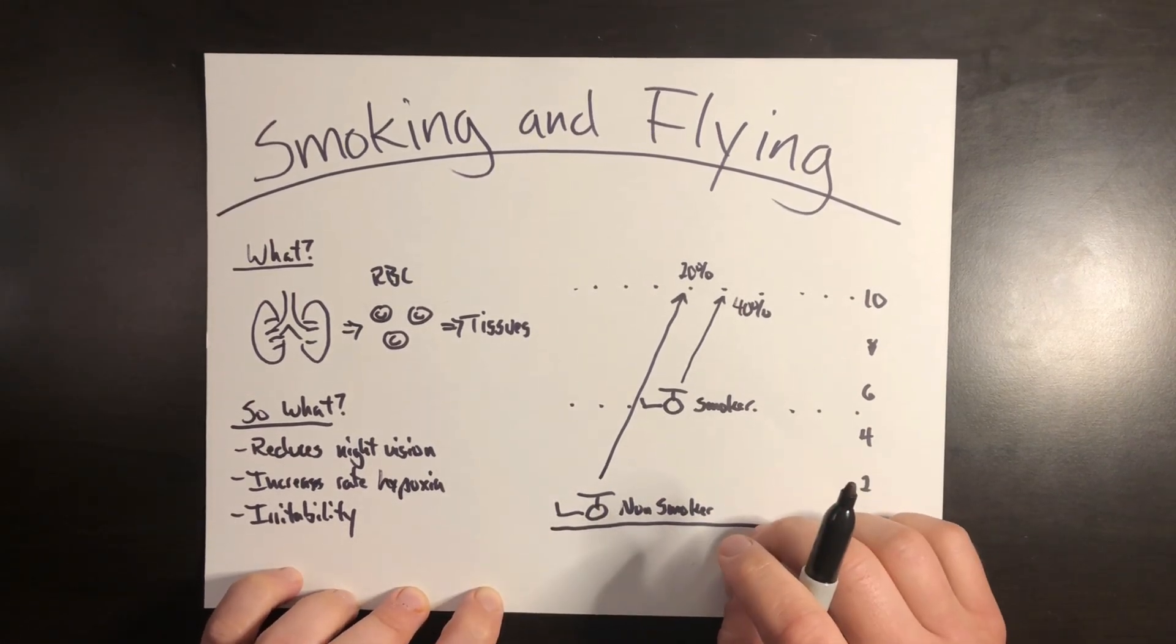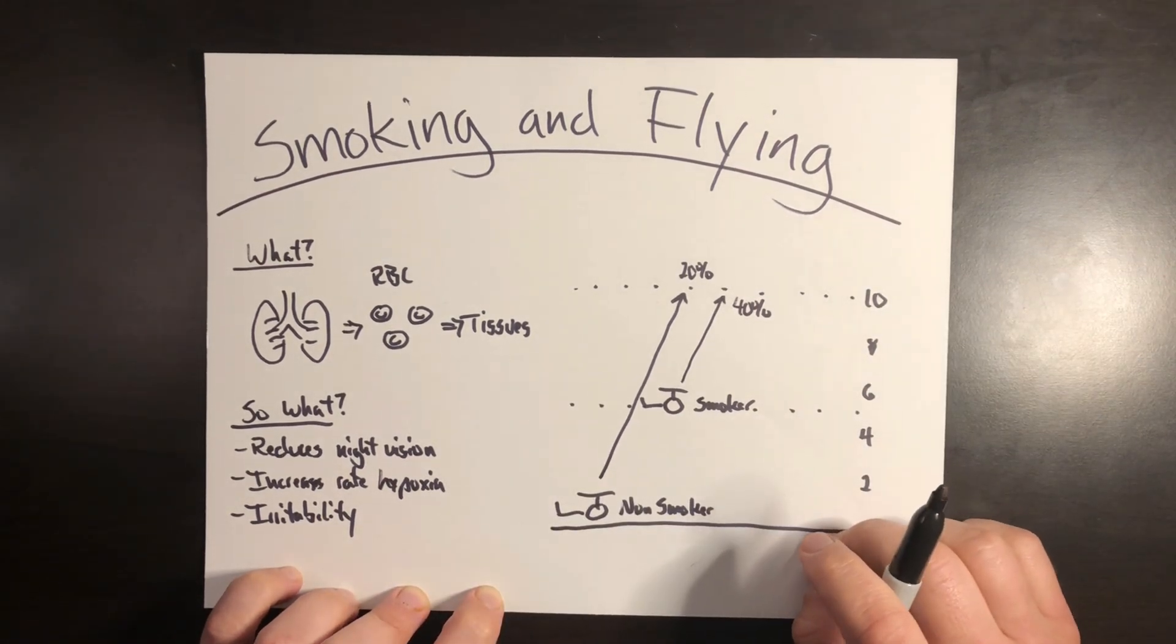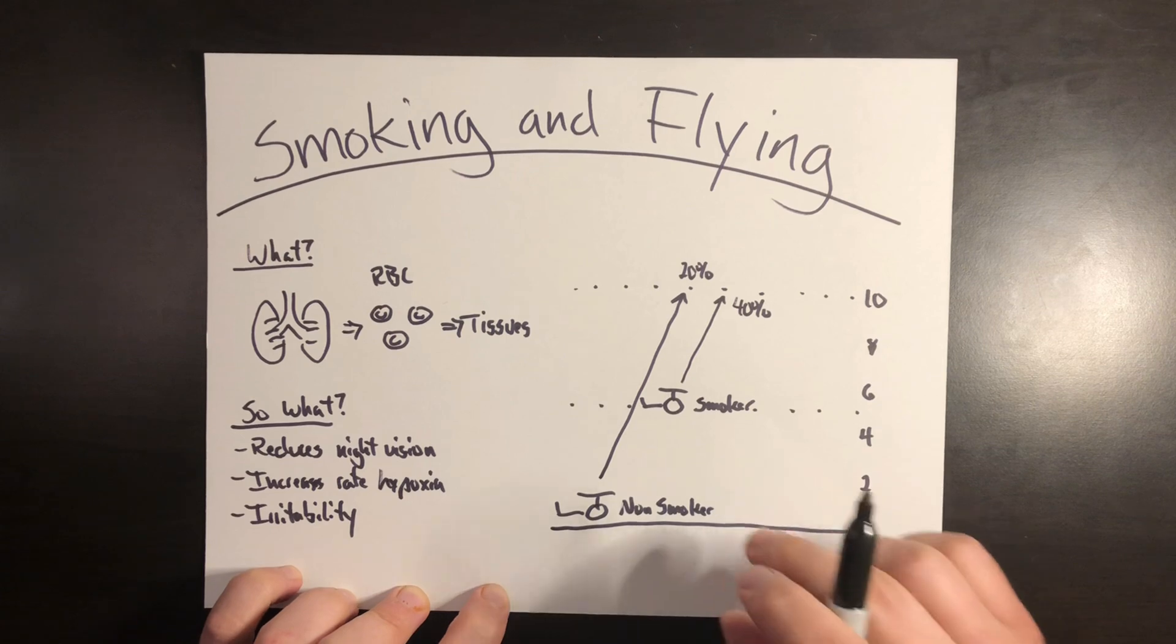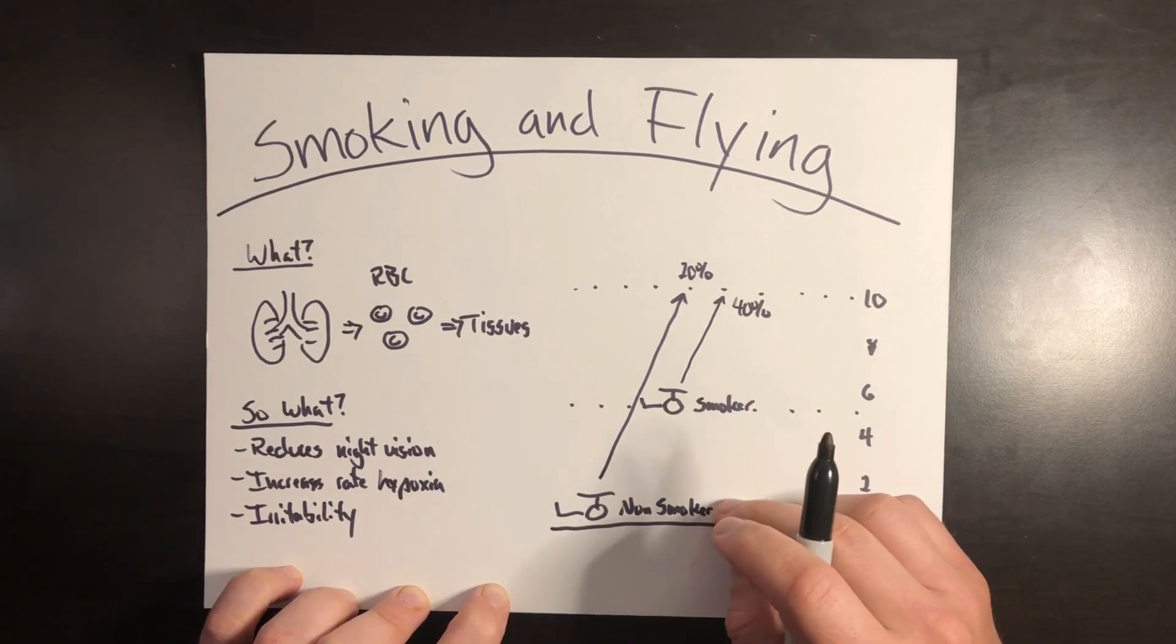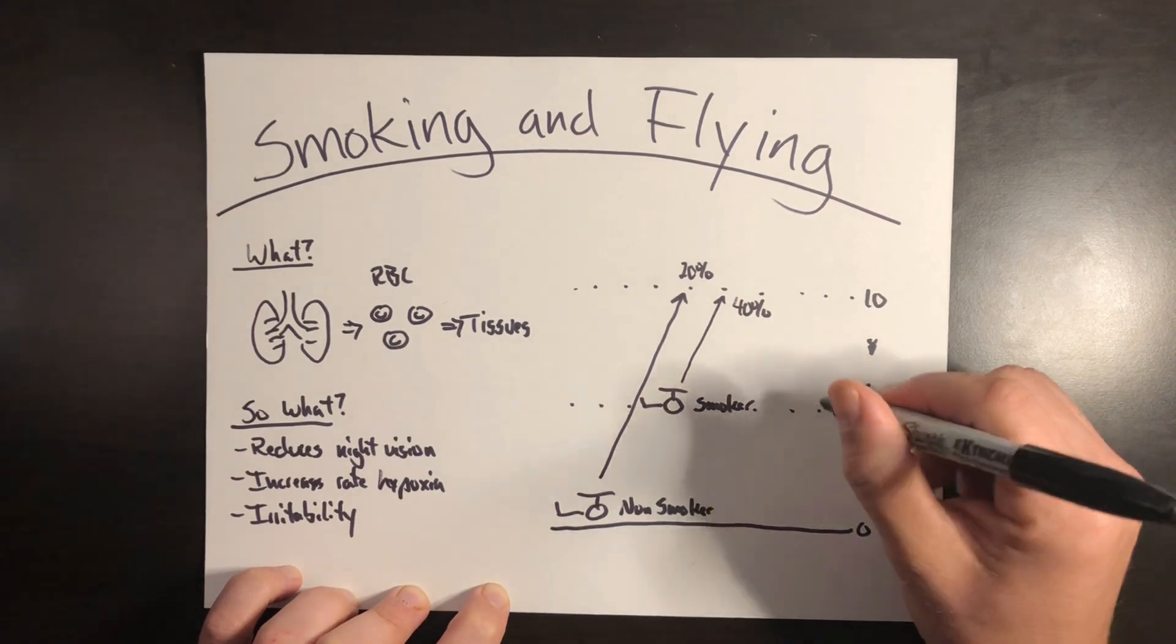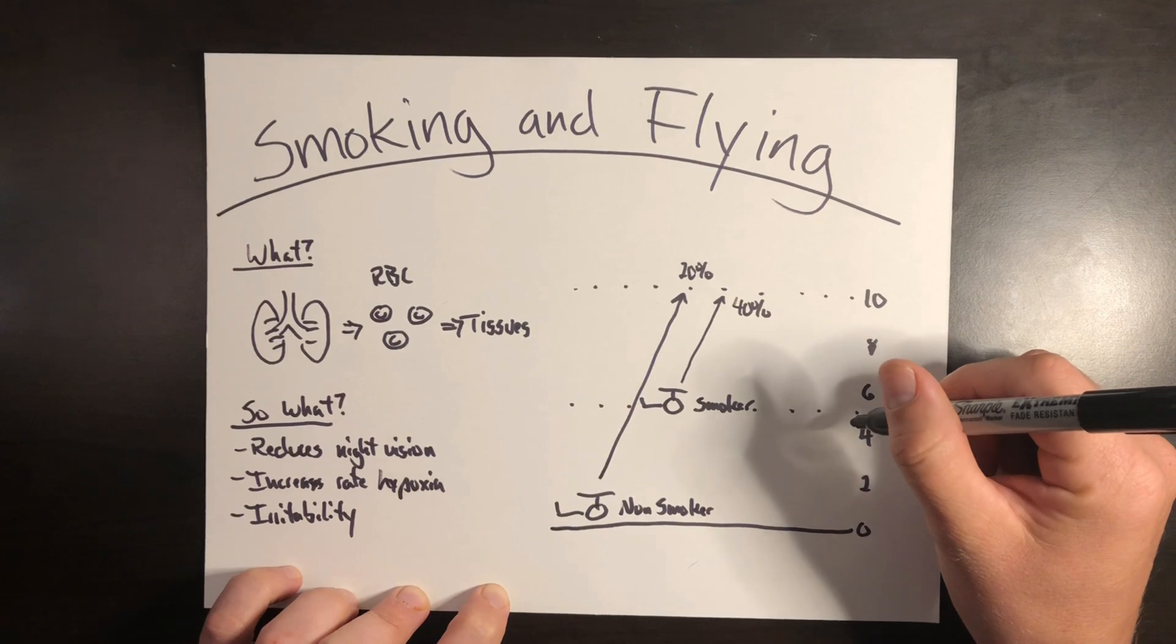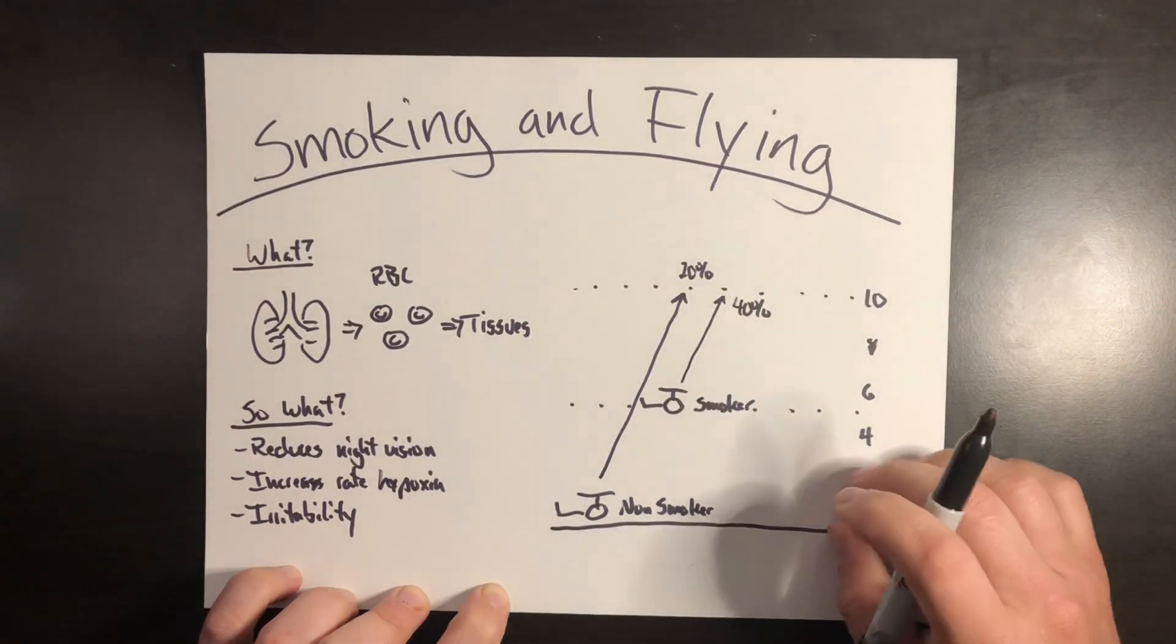So that's the night vision side of it. What about the hypoxia side of it? Once again, I have a whole video on that. I recommend checking out that video if you haven't seen it. But if you're a smoker starting at 5,000 feet of physiological altitude higher than the non-smoker, you could put yourself into the compensatory state of hypoxia. Even if you're operating at, say, 5,000 feet pressure altitude, you're pushing physiologically into 10,000 feet at that point.